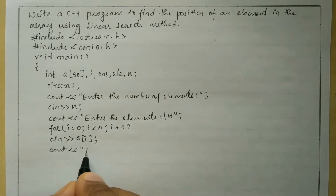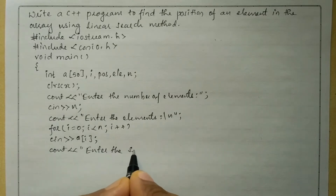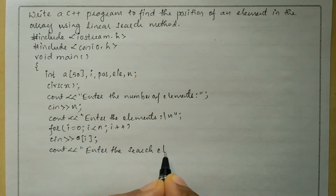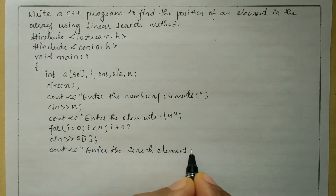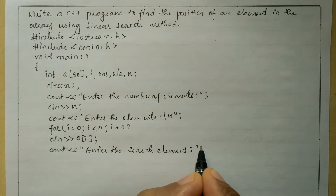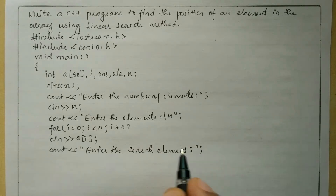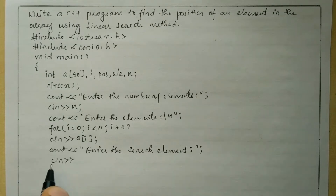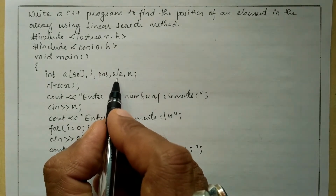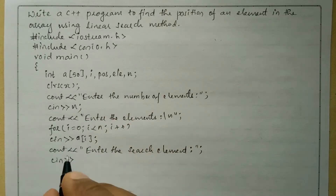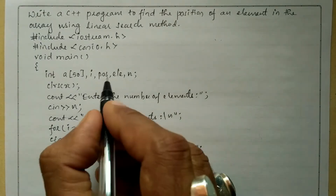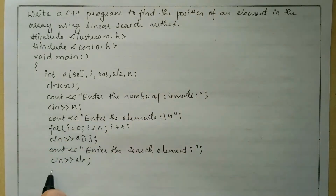Next we will ask the user to enter the search element: cout with stream insertion operator in double quotation marks 'Enter the search element', then semicolon. We receive the response from the user through the keyboard using cin with stream extraction operator and store it in the variable ele, then semicolon.